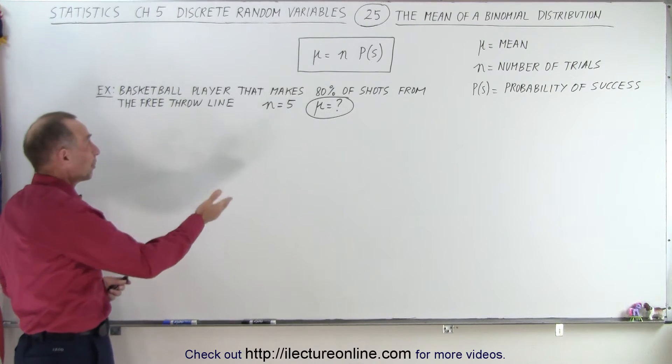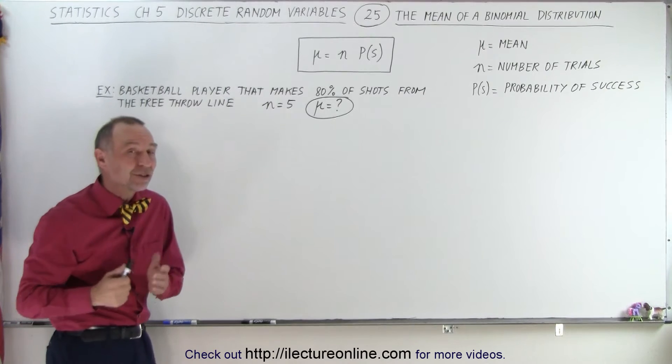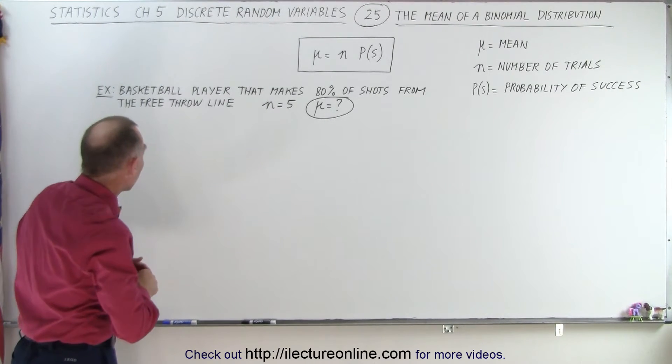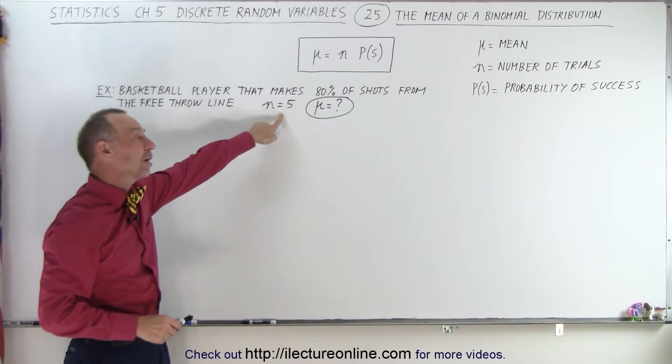We're going to take our example from our previous video where we had a basketball player that makes 80% of his shots from the free throw line, and we're going to attempt five additional shots.